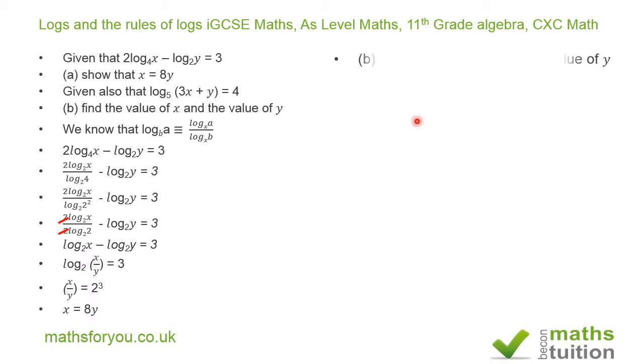Now part B. Part B says find the value of x and the value of y, given also that log(3x + y) to base 5 equals 4.